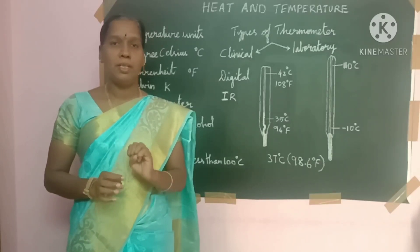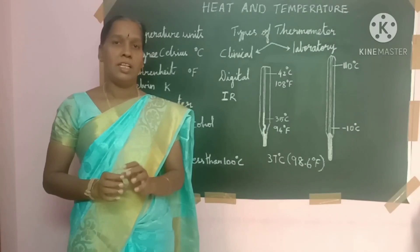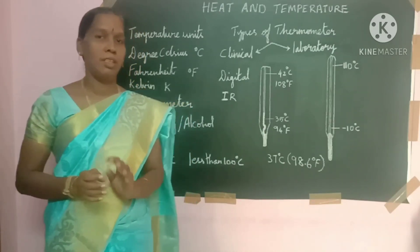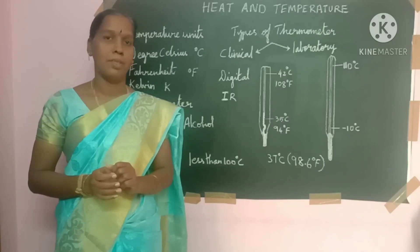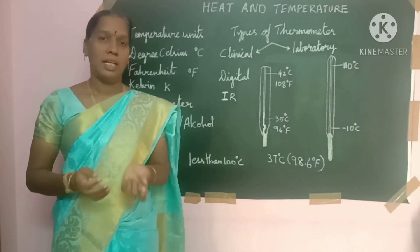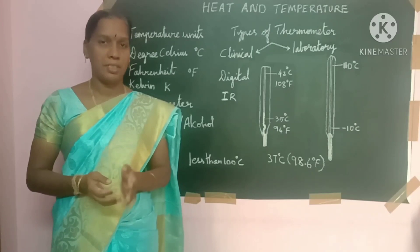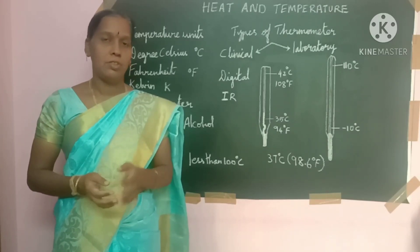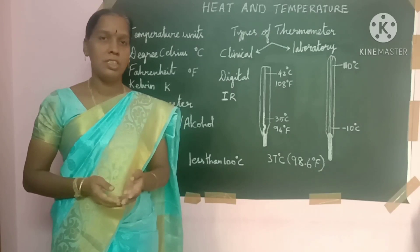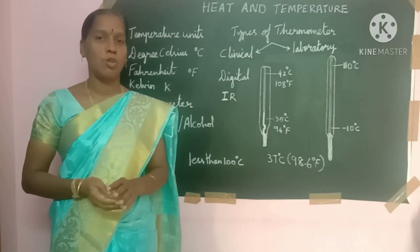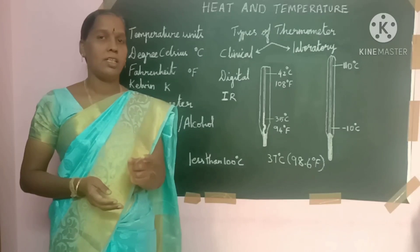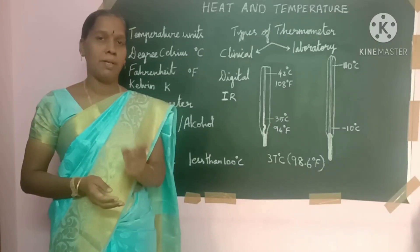Heat cannot be seen — it is invisible — but we can feel it. So how can this heat be measured? It can be measured by using temperature. Temperature is a quantity used to measure the degree of hotness or coldness of a body. So the heat of our body can be determined by temperature.